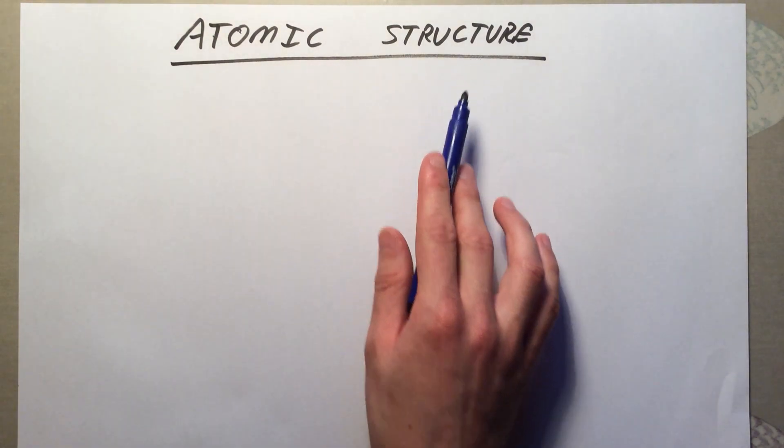In this video, we are going to look at atomic structure and electronic configuration, or how electrons are arranged in our atom.